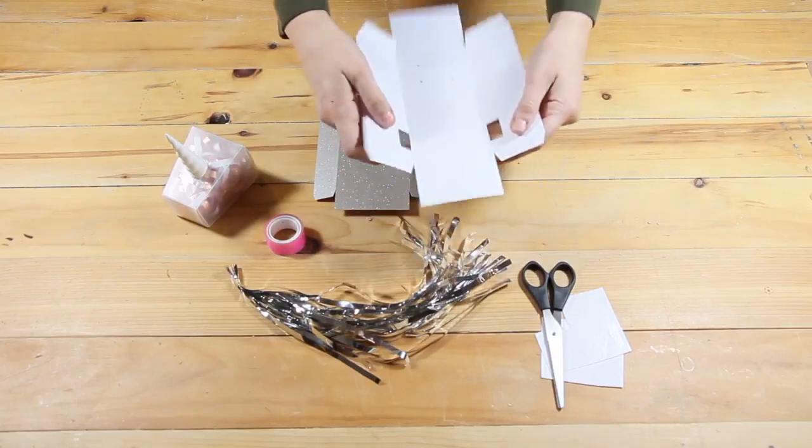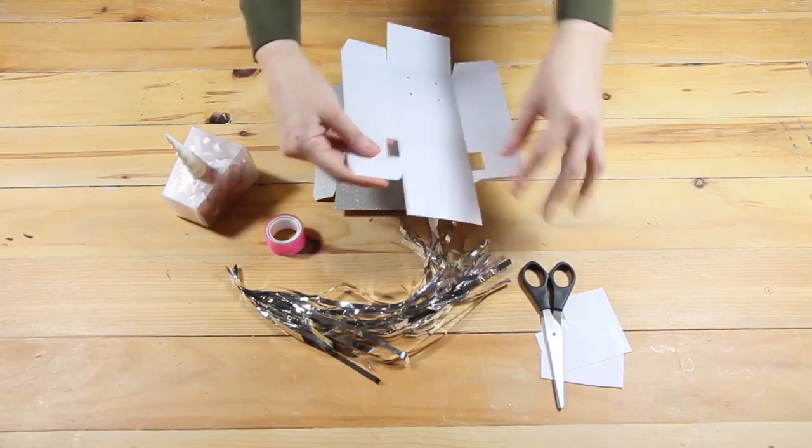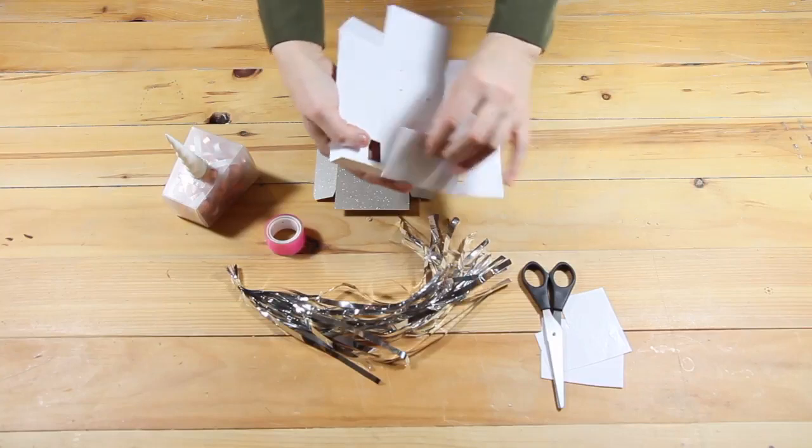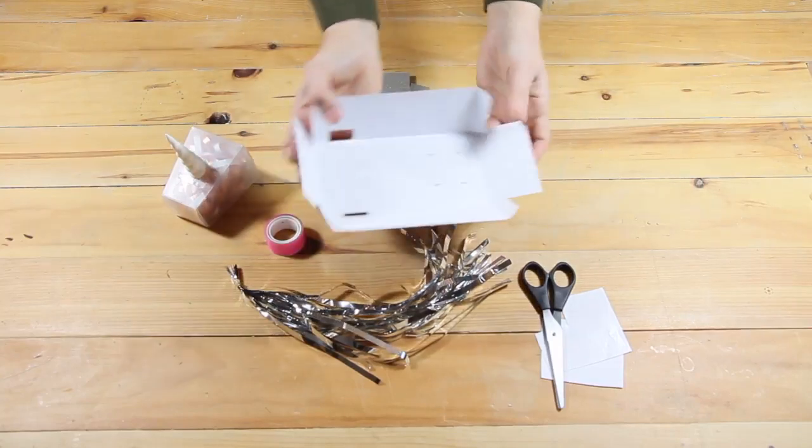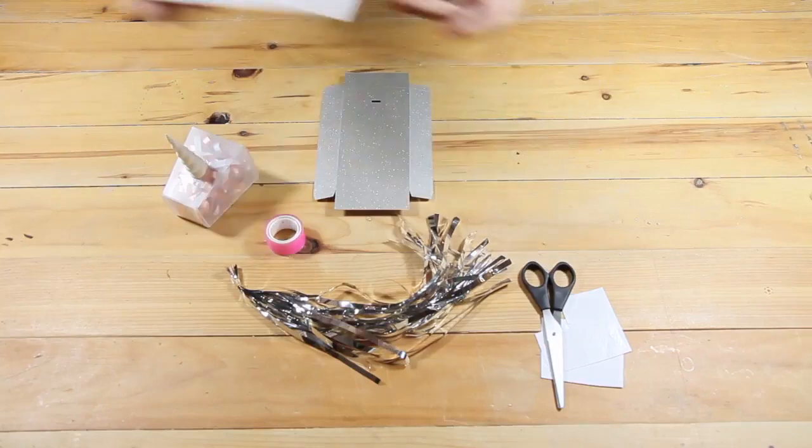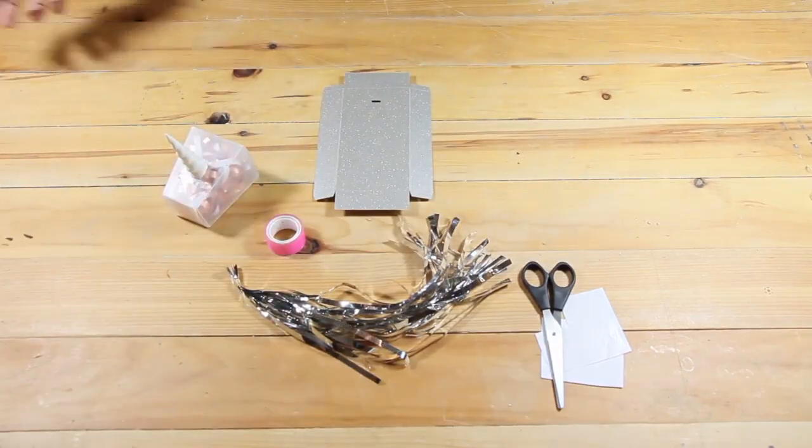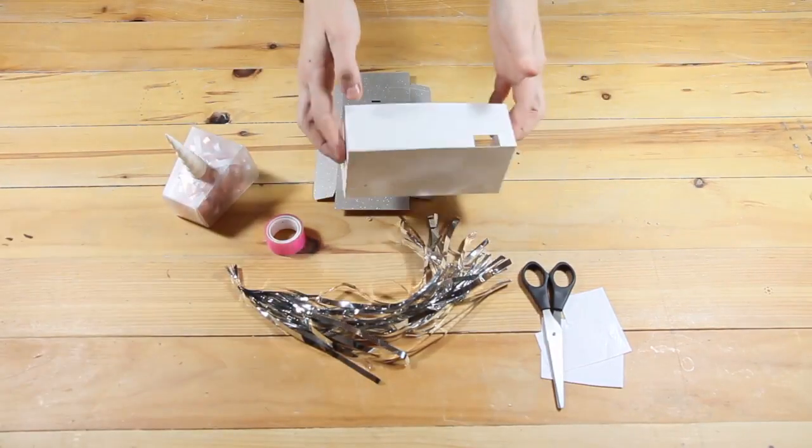Next we're going to construct the body out of two parts. First of all, let's do the bottom bit, the chassis. We're going to fold along the scores like before, and again we're going to use the double-sided sticky back plastic to secure it in place like so.